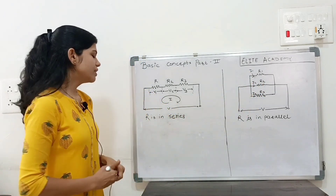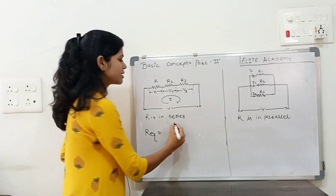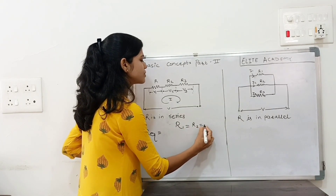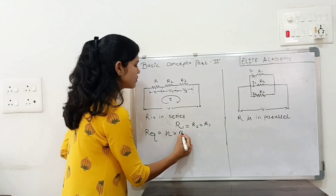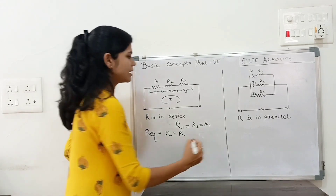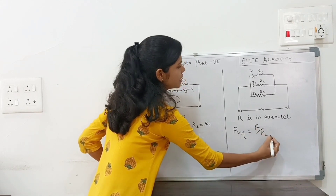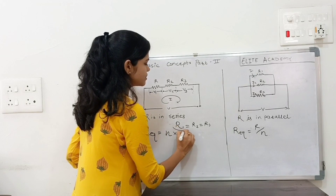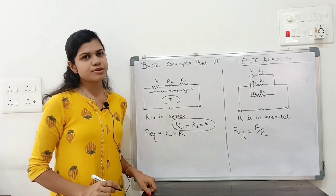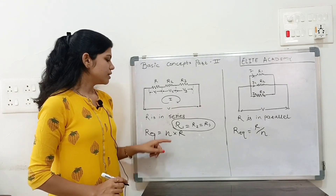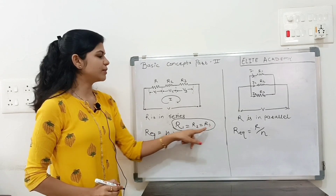Now, if we have to find out R equivalent in both cases where R1 equals R2 equals R3, then the R equivalent formula for series is N into R. And in case of parallel, R equivalent equals R upon N. N is the number of resistances — here there are 3, so multiply by 3 for series and divide by 3 for parallel.